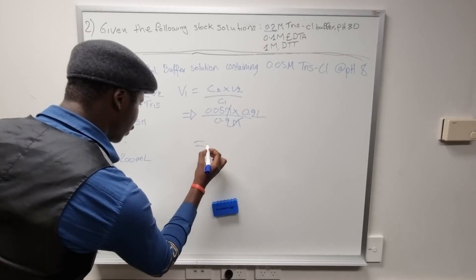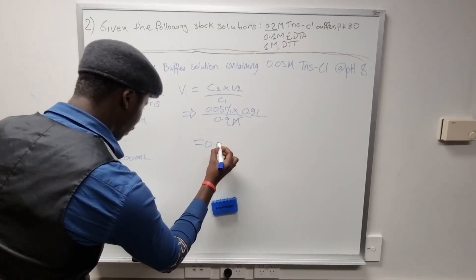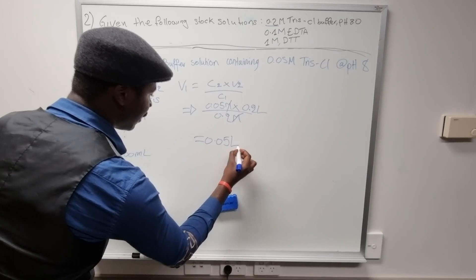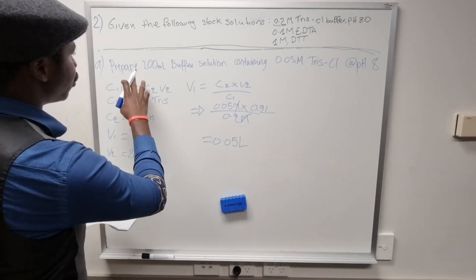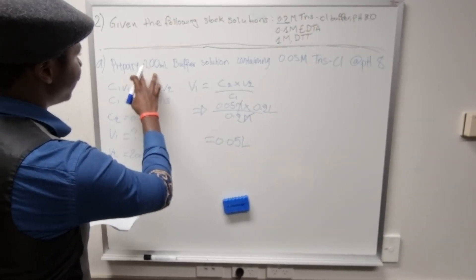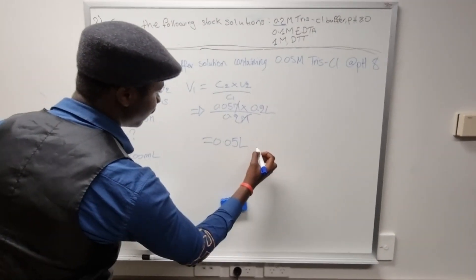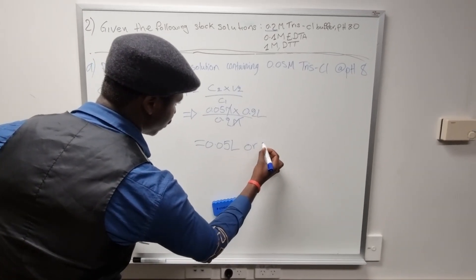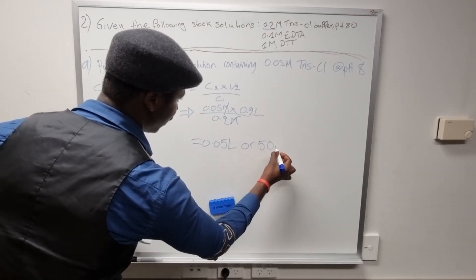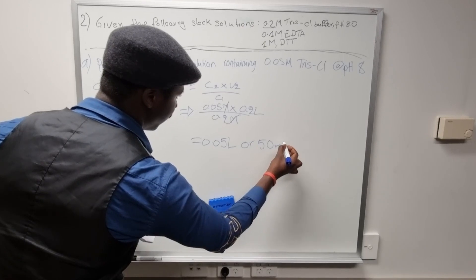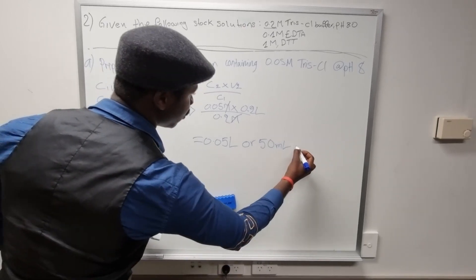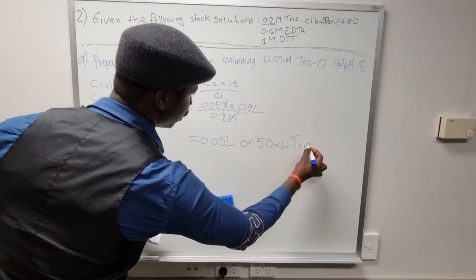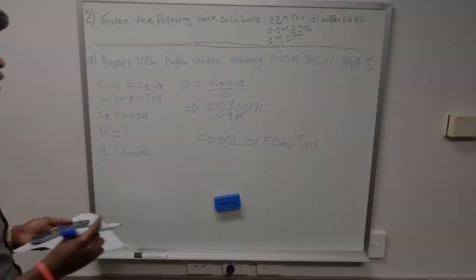That gives us 0.05 liters. Since the answer is required in milliliters, we convert: 0.05 liters equals 50 milliliters of Tris that we need to take from the stock solution.